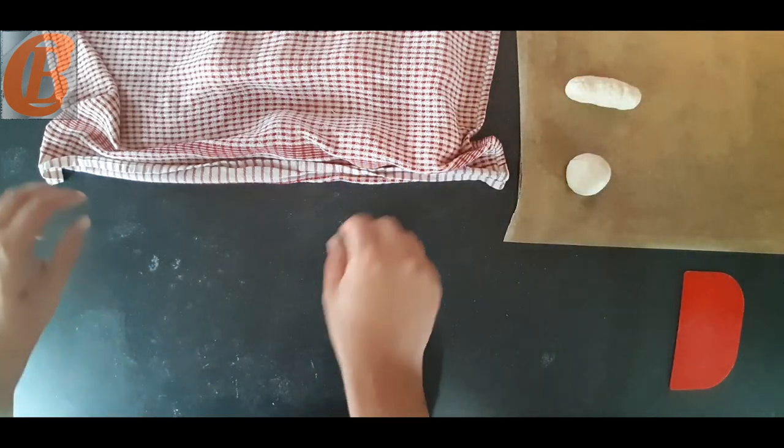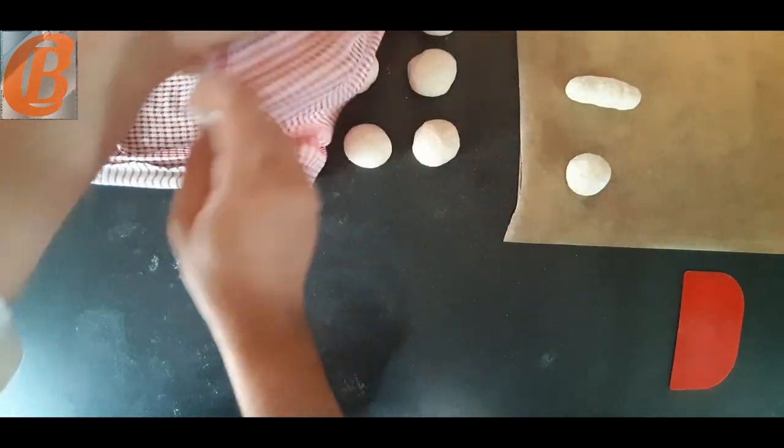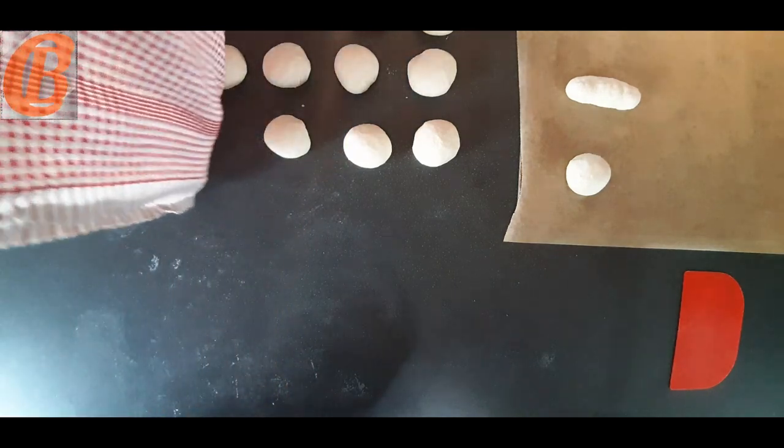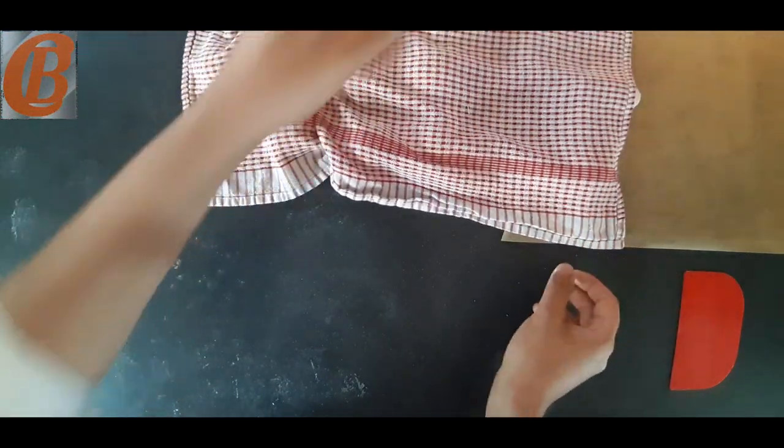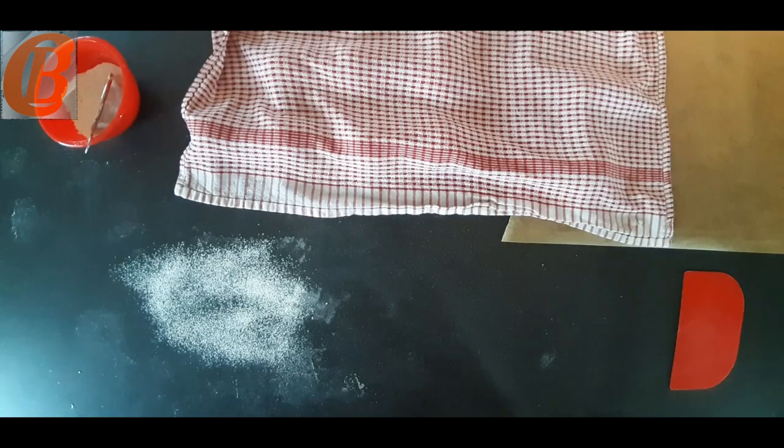So once you've got a couple on your baking tray, you're going to want to move your damp tea towel over to make sure they don't dry out. I always use them from the left of my pile of balls and put them on the left of my baking tray. This means I can use one tea towel to make sure they're all covered still.